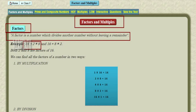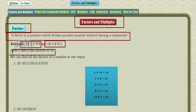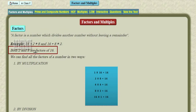16 divided by 2 is equal to 8, and 16 divided by 8 is equal to 2. Here, both 2 and 8 are the factors of 16.